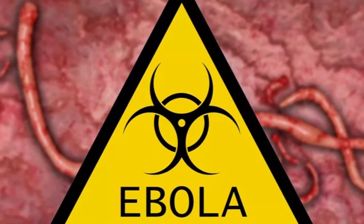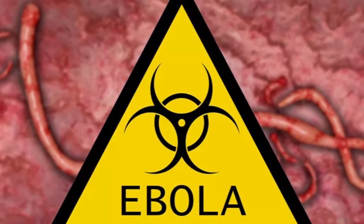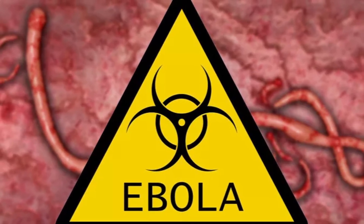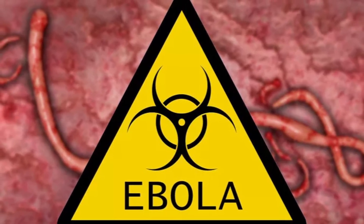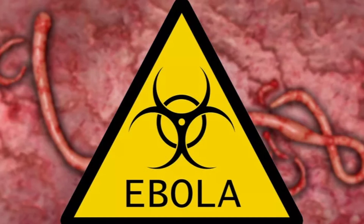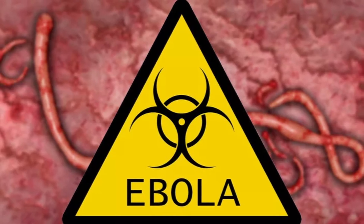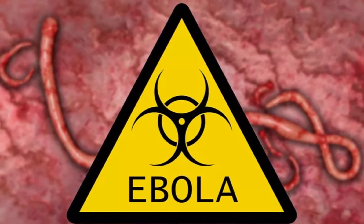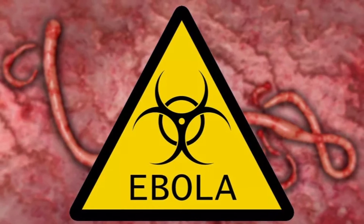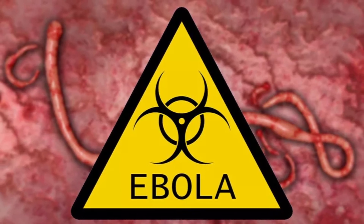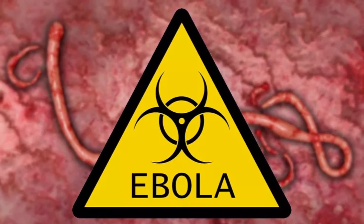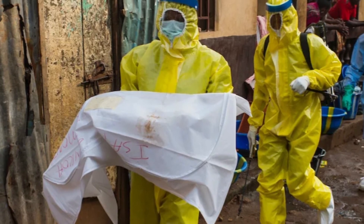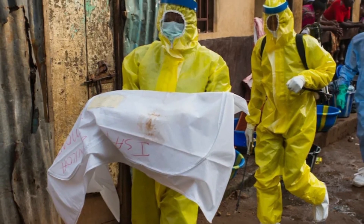Ulcerative vulvitis and orchitis often occur. At the same time, hemorrhagic syndrome develops, characterized by hemorrhages at injection sites, nasal, uterine, and gastrointestinal bleeding. Massive blood loss, infectious toxic and hypovolemic shock cause the death of Ebola patients at the beginning of the second week of the disease.